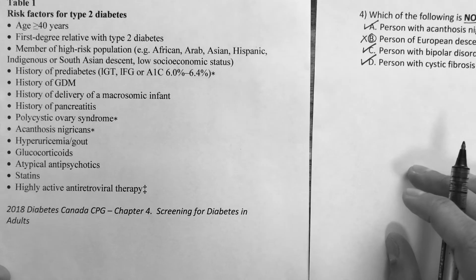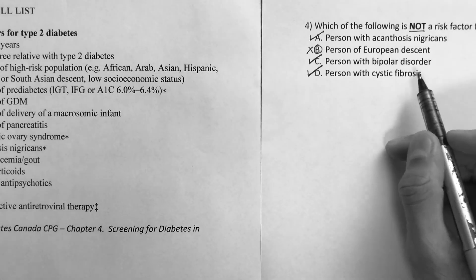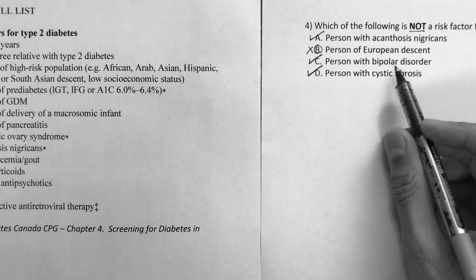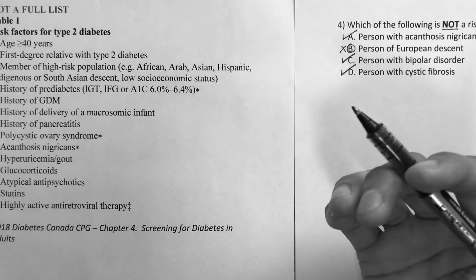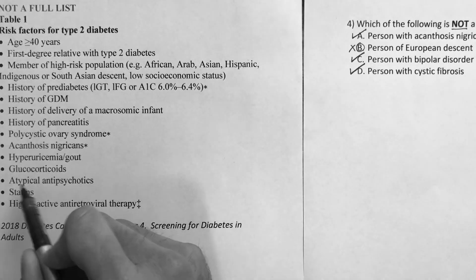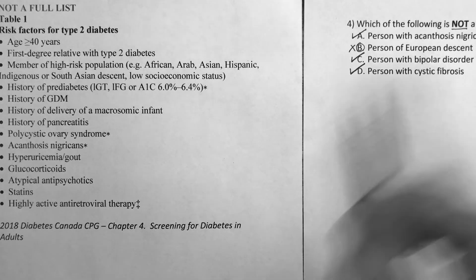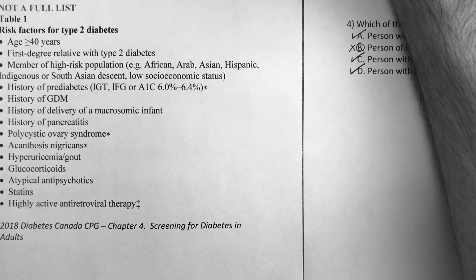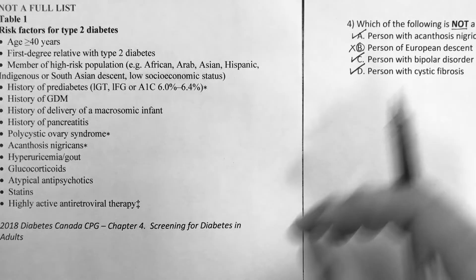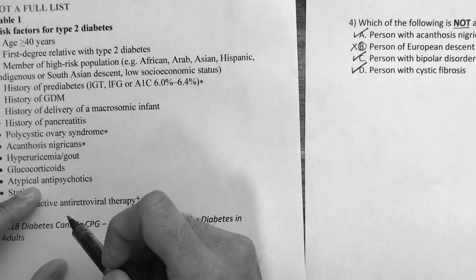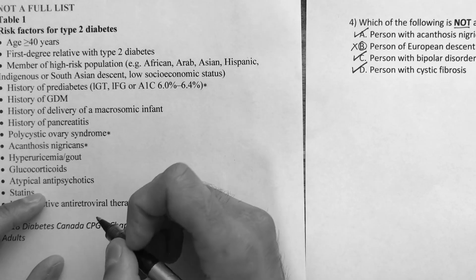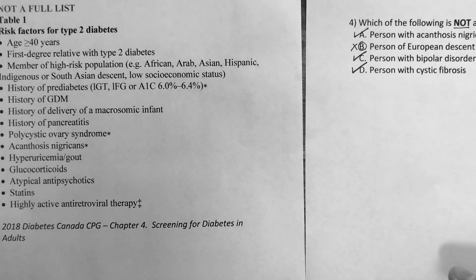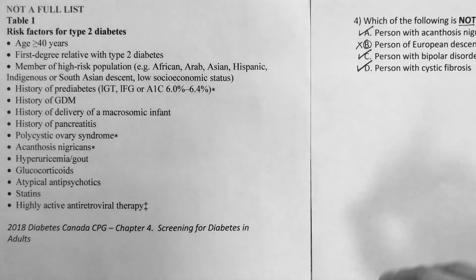An additional interesting point: as we discussed regarding psychiatric conditions like bipolar disorder or schizophrenia — if a person is on an atypical antipsychotic, those medications can also be associated with diabetes and can affect blood sugar levels. Do have a look at that.